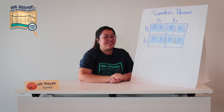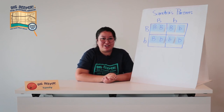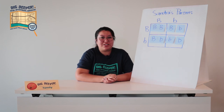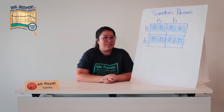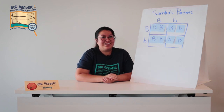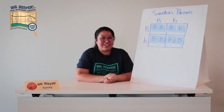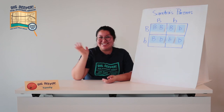Pretty crazy! I challenge you to make a Punnett square at home to figure out how you ended up with the traits that you got. You can do the same thing with curly hair or straight hair. Here's a hint: curly hair is dominant. Thank you for joining us, and maybe we'll see you next time. Bye!